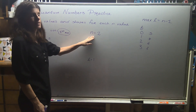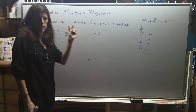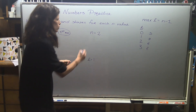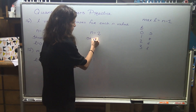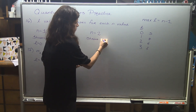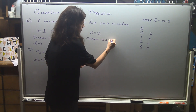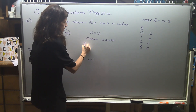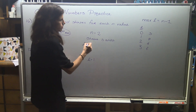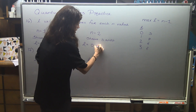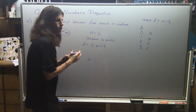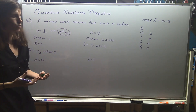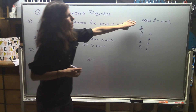Similarly, in the second row of the periodic table we use the s block and the p block for our electron configurations, so the shapes that we see are s and p. That means that I have l values of 0 and 1 that are allowed underneath the principal quantum number of n equals 2.